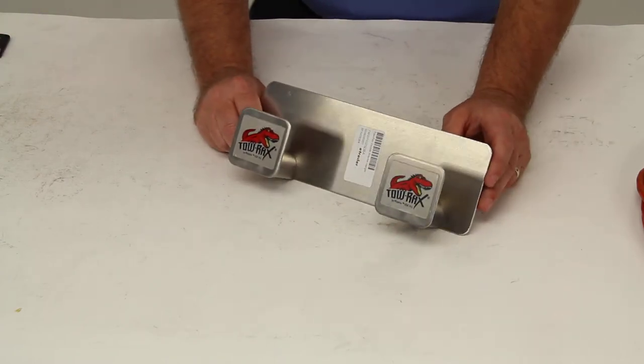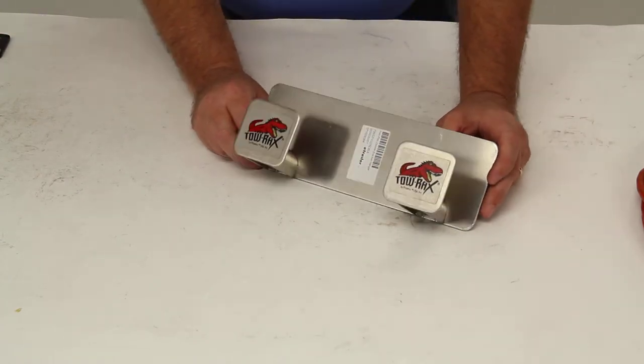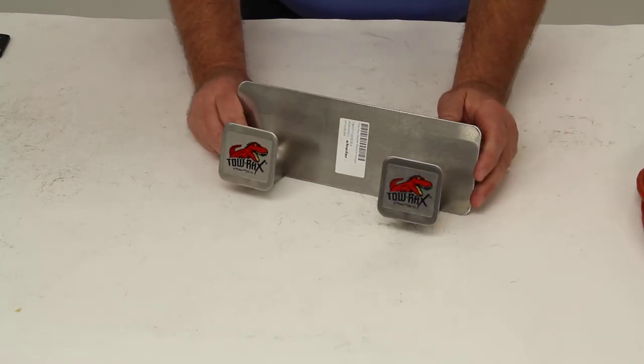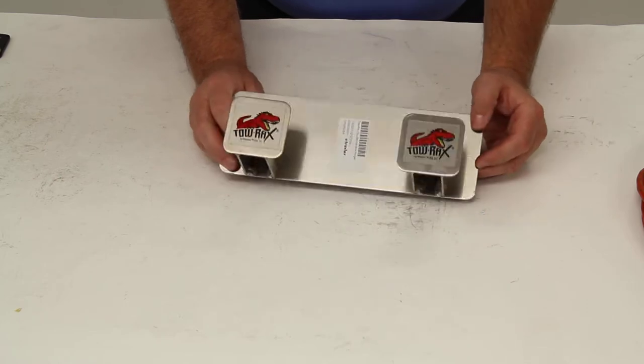Today we're going to review part number TWSP1025DBA. This is the Torex double bracket hanger made of aluminum.